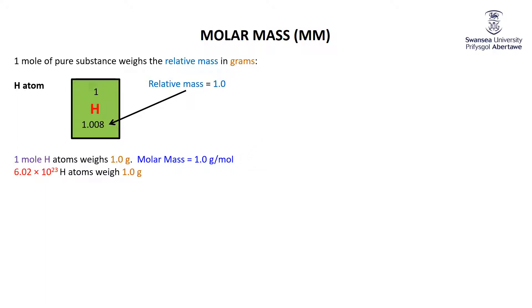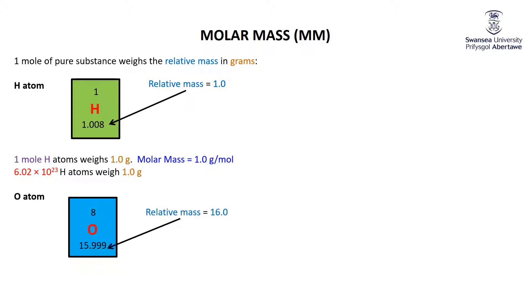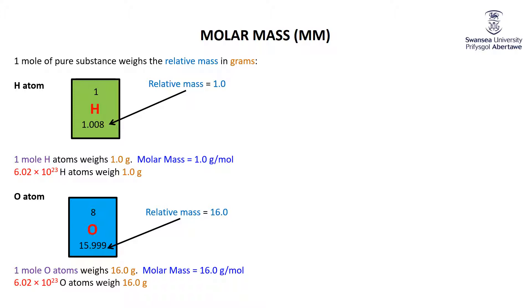So the molar mass of hydrogen is 1.0 grams per mole — in other words, 6.02×10²³ hydrogen atoms weigh 1 gram. Oxygen: the periodic table gives a relative mass of 15.999 — let's call it 16. That tells us that one mole of oxygen atoms weighs 16.0 grams. The molar mass of oxygen is 16.0 grams per mole, or in other words, 6.02×10²³ oxygen atoms weigh 16 grams.